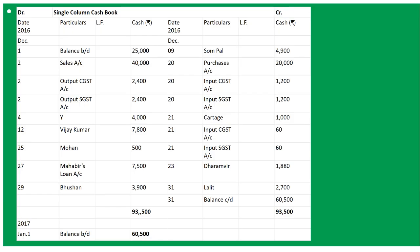Understood all these entries? Discount entries we will not record here - I am telling you again - because it is a single column cash book. If it were a triple column cash book, we would record discount received or allowed. So all discount entries are recorded in working notes. We will now total it up: debit side 93,500 = credit side 93,500. But credit side is lacking behind by 60,500, which is the carried down balance on the last date of December 31st, 2016. 'By Balance c/d' 60,500, carried down to 'To Balance c/d' on January 1st 2017.